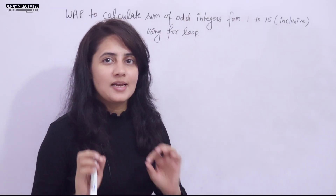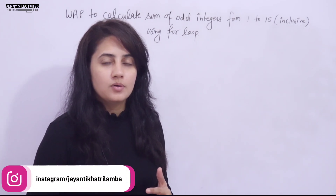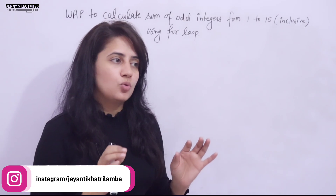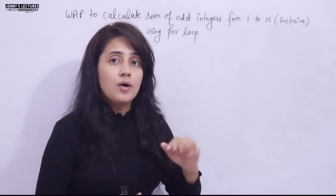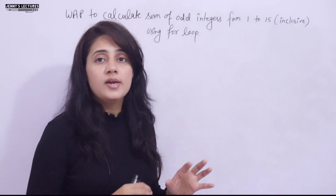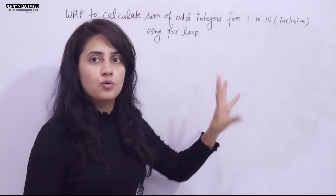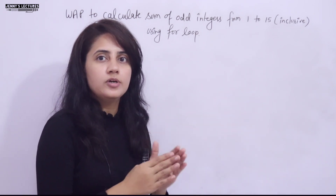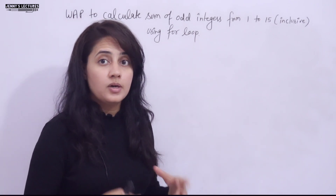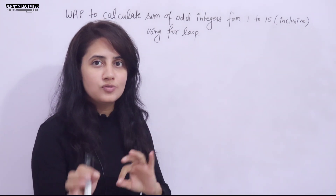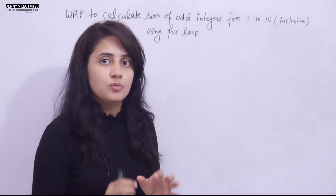In this series on learning C++ programming, we are discussing loops. We have discussed the for loop so far. Now here is a coding exercise for you: write a program to find the sum of odd integers from 1 to 15, inclusive, using a for loop. Pause the video and try it out first — I'll explain the solution step by step afterward.